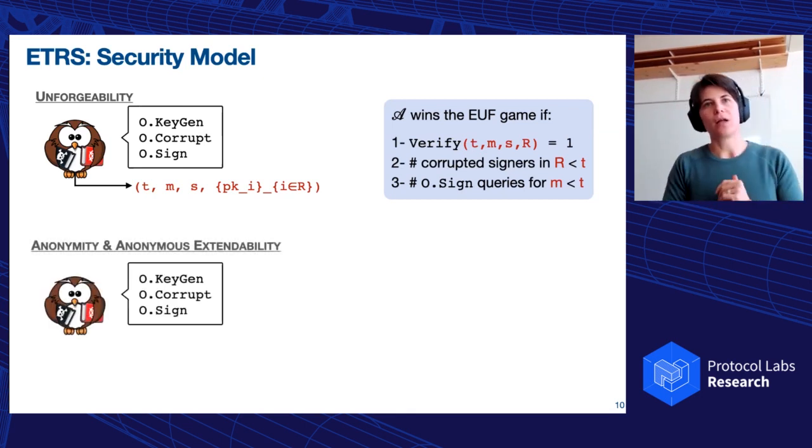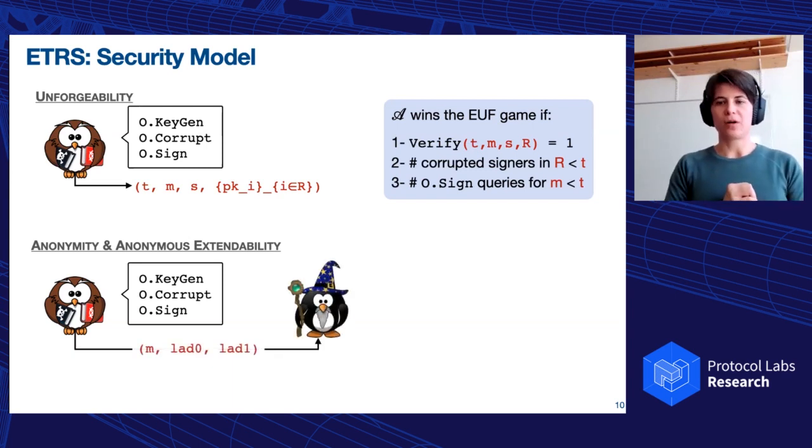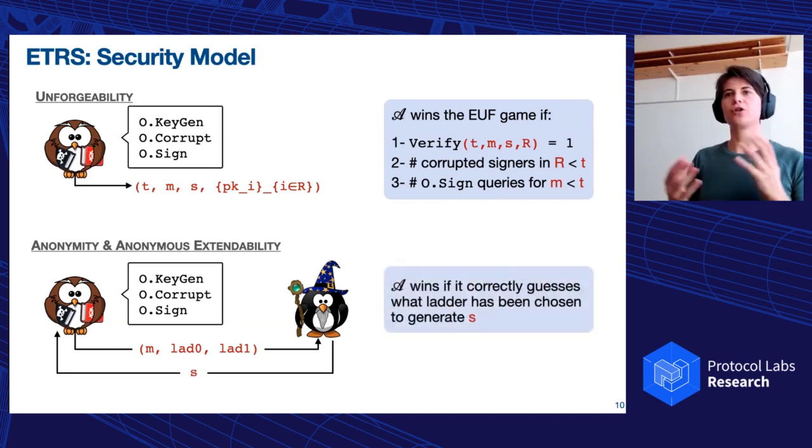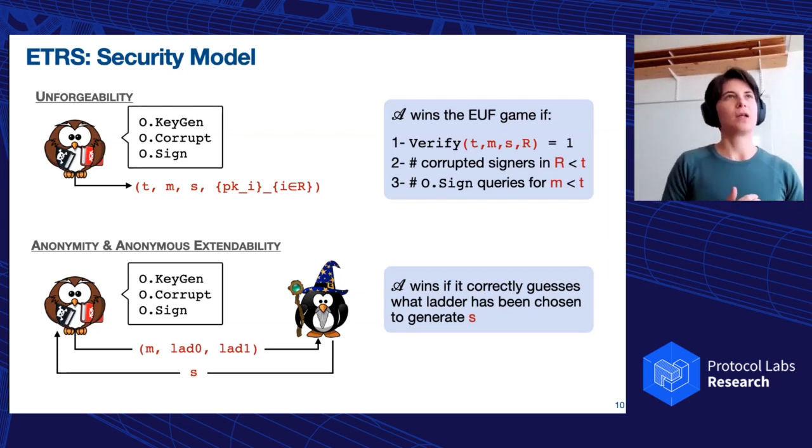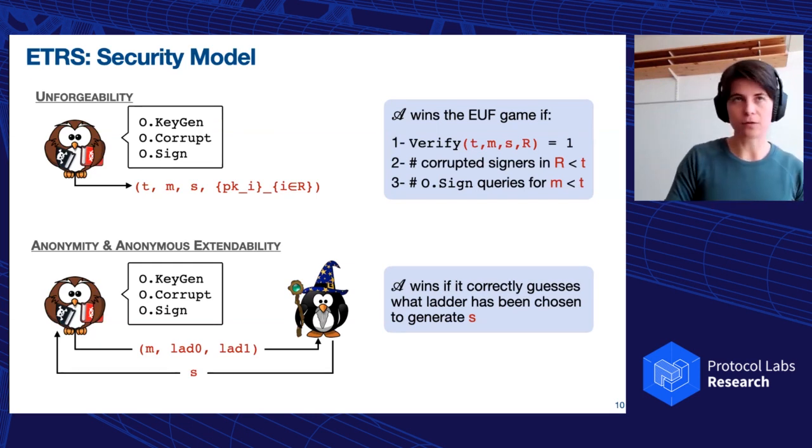And for anonymity, I already anticipated a little bit with the previous slide and the two ladders, but essentially we give the adversary access to the same oracles as before. But this time, the adversary will interact with our amazing challenger, to whom he will give a message and two ladders. And the challenger will reply with a signature. And for anonymity, the adversary should be able to correctly guess which of the two ladders has been executed by the challenger. And we have two notions of anonymity and depends if you allow for ladders to grow even with different lengths, or if you just allow one extension or just a simple, you cannot distinguish who is the signer in a given set. That's to give the intuition.